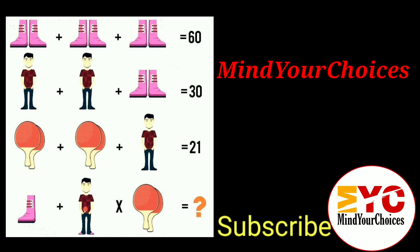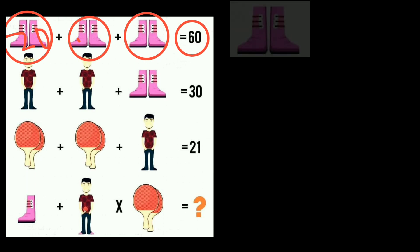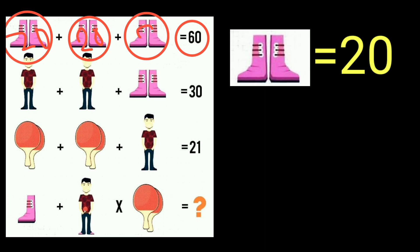Let's solve this puzzle. As you see in the first equation, there are three pairs of shoes. You can see these three pairs of shoes which equals 60. It means the value of one pair of shoes is 20. So we have 20 plus 20 plus 20 equals 60.